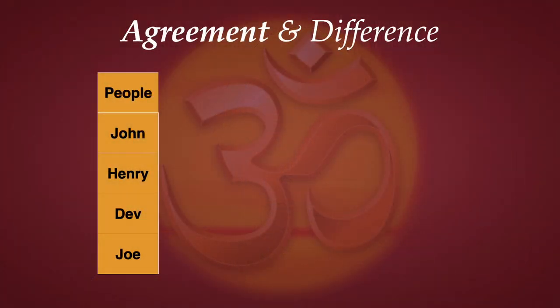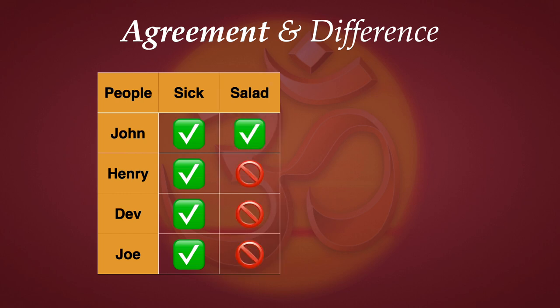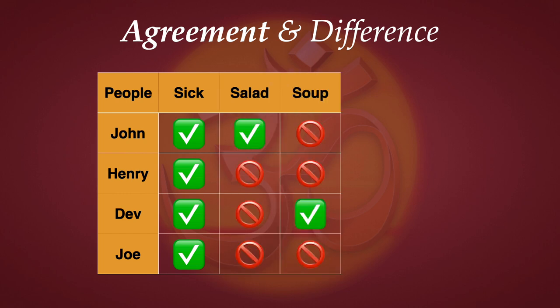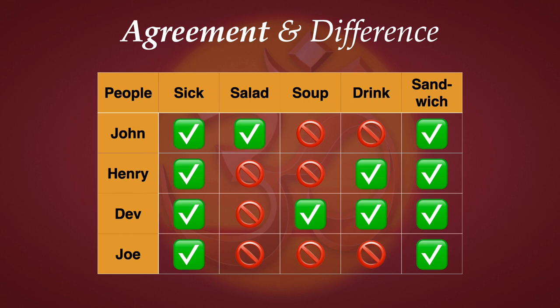The other logical principle we have to master to understand the arguments in this chapter is the method of agreement and difference. This is a classical logical method you've probably used intuitively, but when it's formalized it makes more sense. Say I go out to dinner with some friends and afterwards we all get sick. We analyze what we ate: John only ate the salad, Dave had the soup and the drink, Henry only had the drink, Joe didn't eat anything — but they all had the sandwich. By the principle of agreement, the sandwich is the cause of them getting sick.